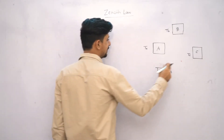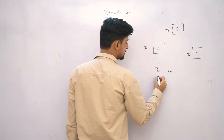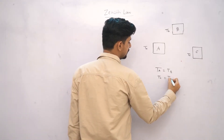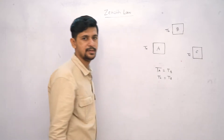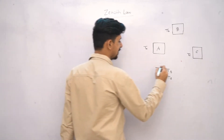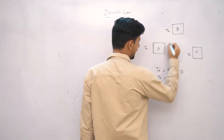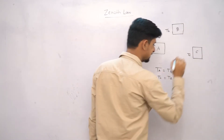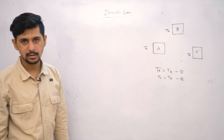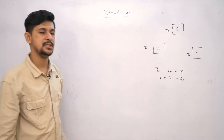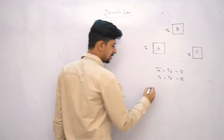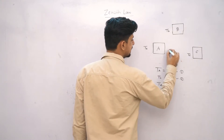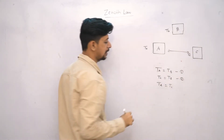The second condition is: if the temperature of the third body C is equal to the temperature of the second body B, that is T_C equals T_B. So we have two conditions: temperature of A and B is the same, and temperature of B and C is the same. As per Zeroth Law, we can say that the temperature of A and C will also be equal.